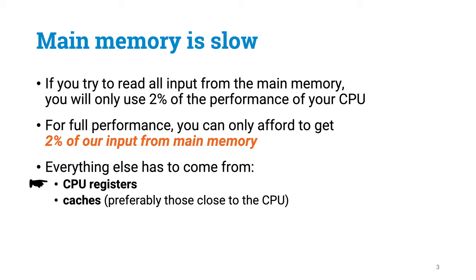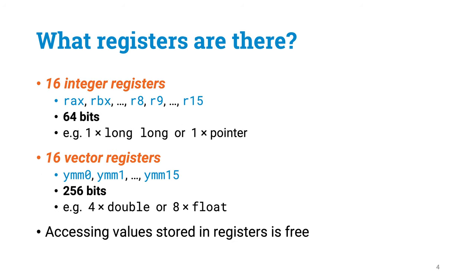In this part we will focus on registers. In the next part we will come back to cache memory. As we have discussed earlier, in a typical Intel CPU there are two types of registers. There are 16 integer registers that can hold 64-bit numbers. This is enough space for something like long-long in C++. And there are 16 vector registers that can hold 256-bit vectors. And this is enough space for something like eight single-precision floating-point numbers.